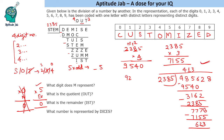Now to answer the questions: M represents the digit 5. The quotient OUT is 413. The remainder IST is 623. The number represented by D is 9. The number represented by DICE is 9608 and 4 — completing the solution to this cryptarithmetic set.